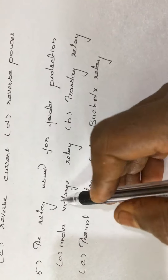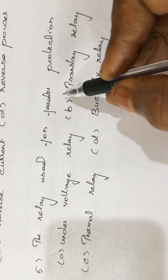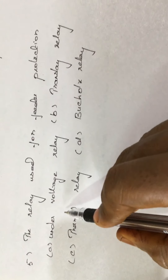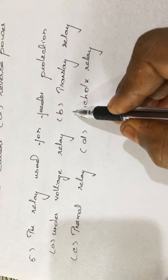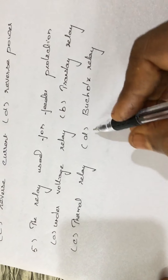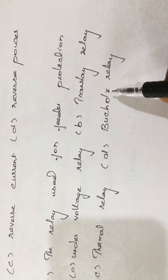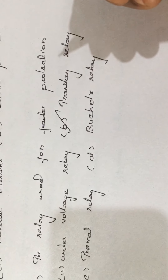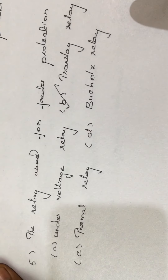Question number 5: the relay used for feeder protection — the options given are: Option A: under voltage relay, Option B: translay relay, Option C: thermal relay, Option D: Buchholz relay. We well know that feeder protection is done by the translay relay.